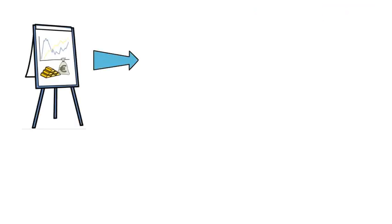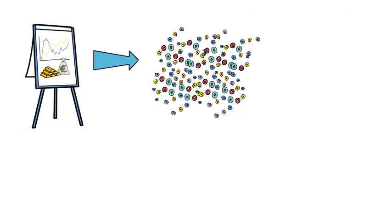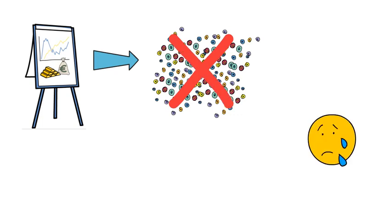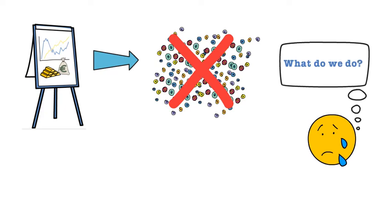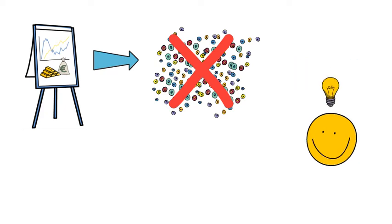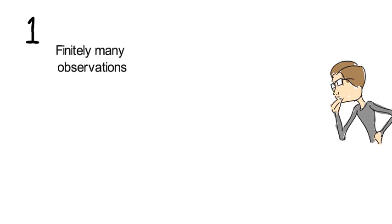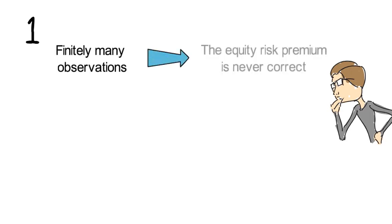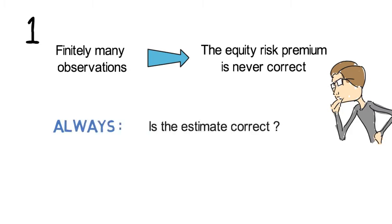So it's clear that in finance, we cannot take an infinite amount of realized excess return observations. So what do we do? Well, at first, we need to appreciate that for finitely many observations, we will never obtain the correct ex-ante expected equity risk premium. Instead, there will always be doubt whether our estimate is indeed correct.